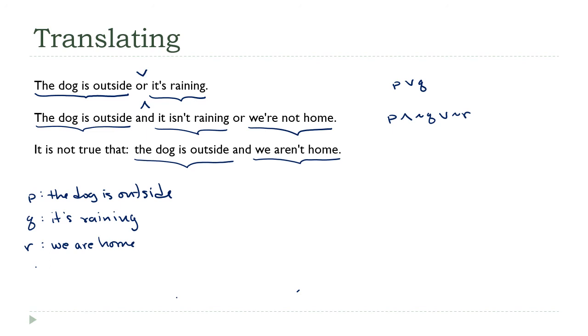Now this next one is a little tricky. Sometimes to get the logical statement we want, the English has to get a little tortured. Okay, that's kind of what's happening here. This is 'the dog is outside' - that's p - 'and we aren't home' - that's ~r. And this 'it is not true that' out in front, that's a way of grouping. So I'm going to negate this entire thing with parentheses. Sometimes there's just no graceful way to say a particular thing in English.